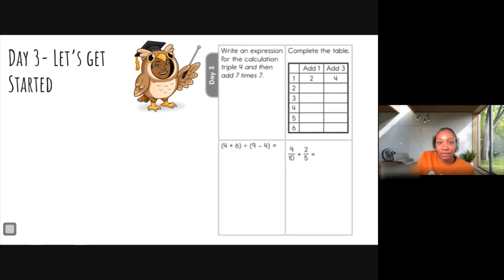Here's one of those questions where we have to follow directions. Let's underline some important information here. We see triple four and then add seven times seven. So the first thing we need to do, how do we triple something? Well, we multiply it by three of course. And then it says to add seven times seven.